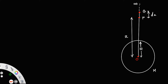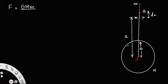Let us call the centre O. Now, if you place a mass m at point P, the gravitational force of attraction of the earth on this mass m is equal to: F_P = G times mass of the earth times m, divided by the distance squared, that is x squared.